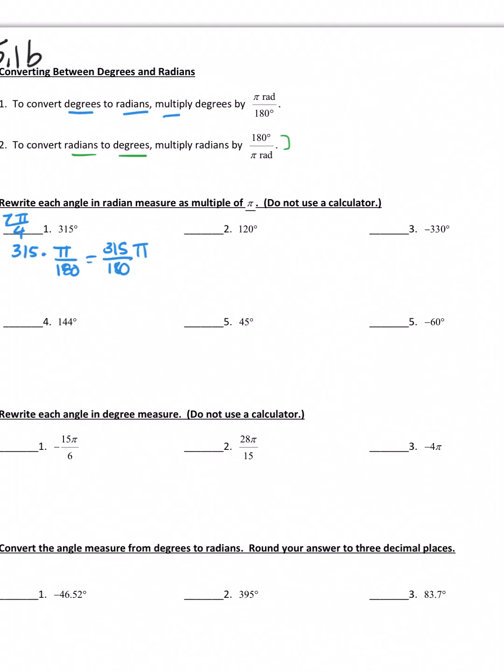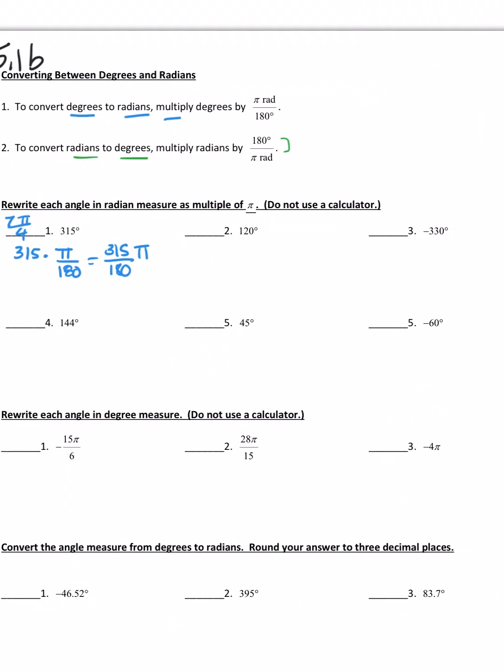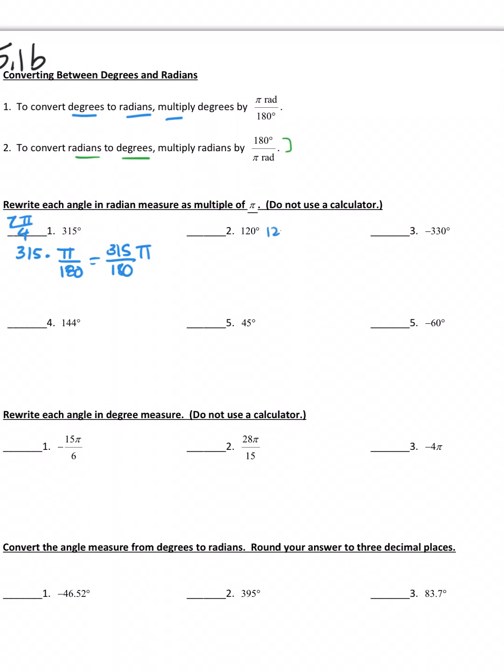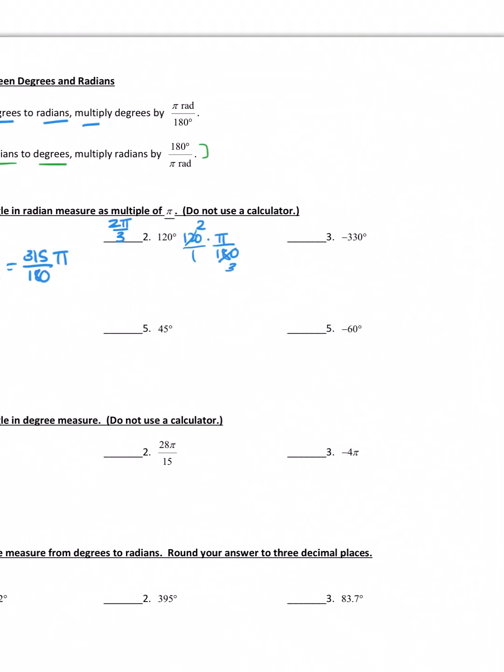If we continue on with number 2, 120 times pi over 180. This one's definitely easier to reduce because both are divisible by 60. So that's a 3 and a 2, so it becomes 2π over 3. So definitely, I encourage you to reduce mentally if you can. But if it's just a wonky fraction, just feel free to use your calculator.